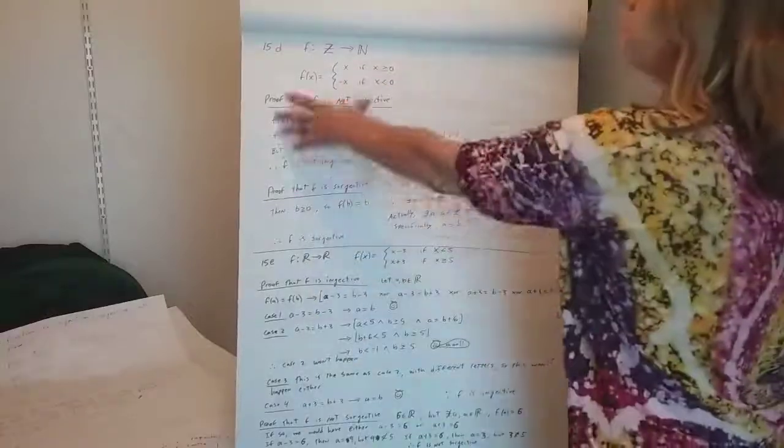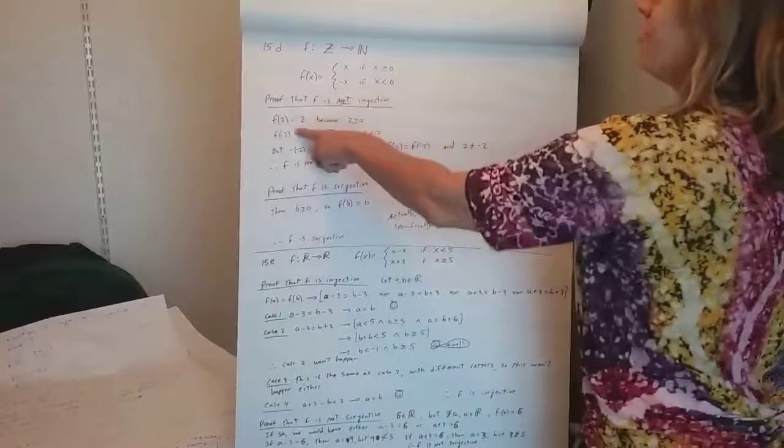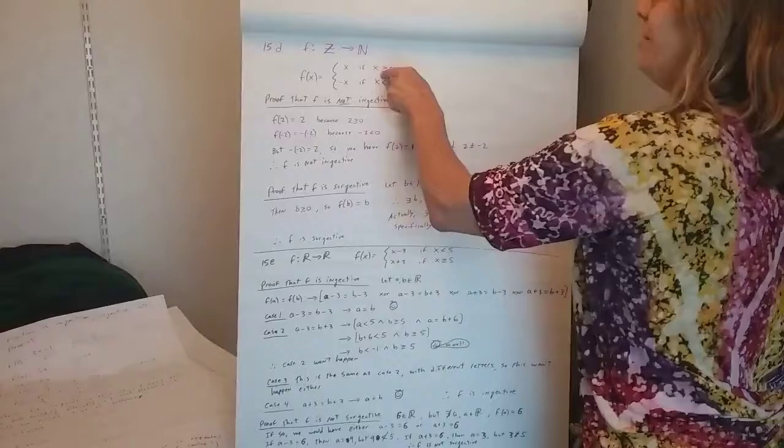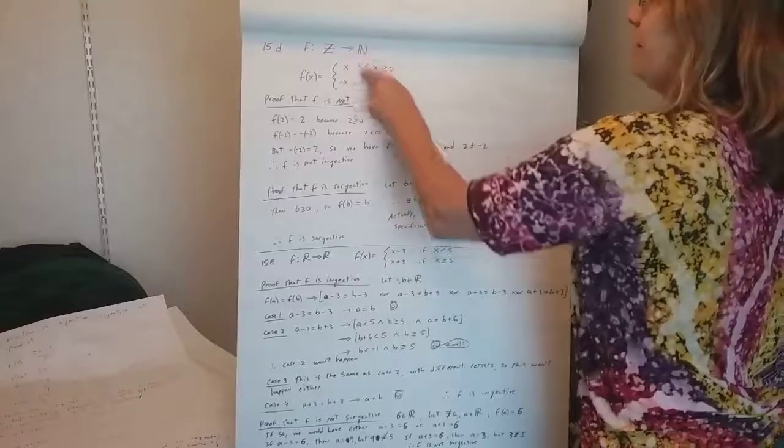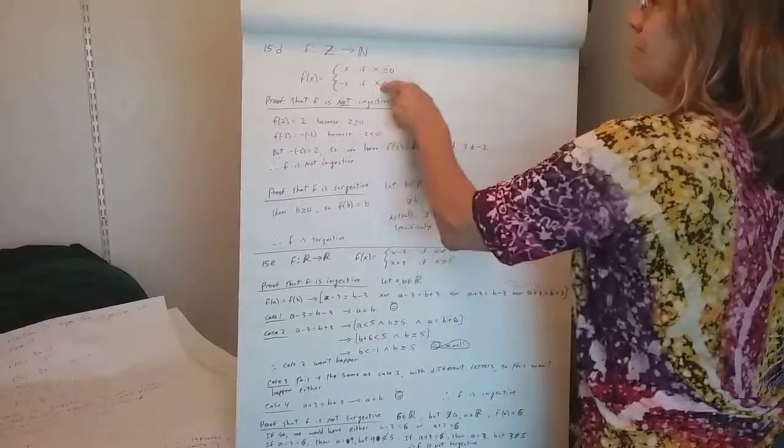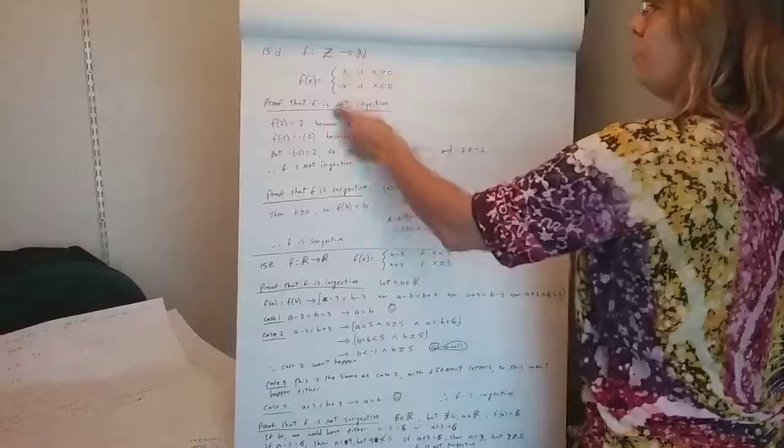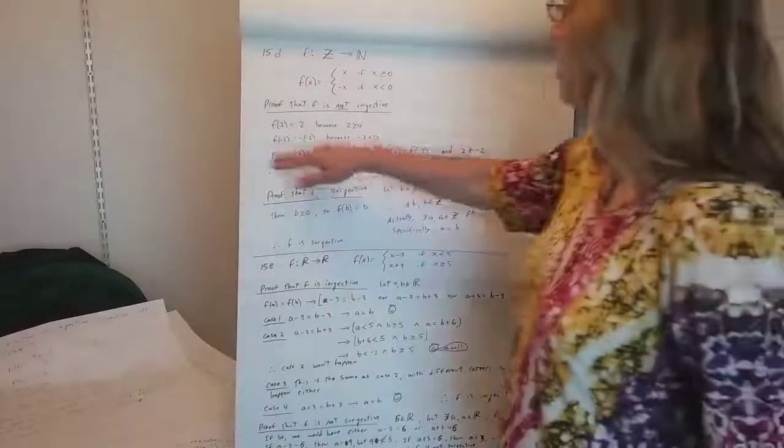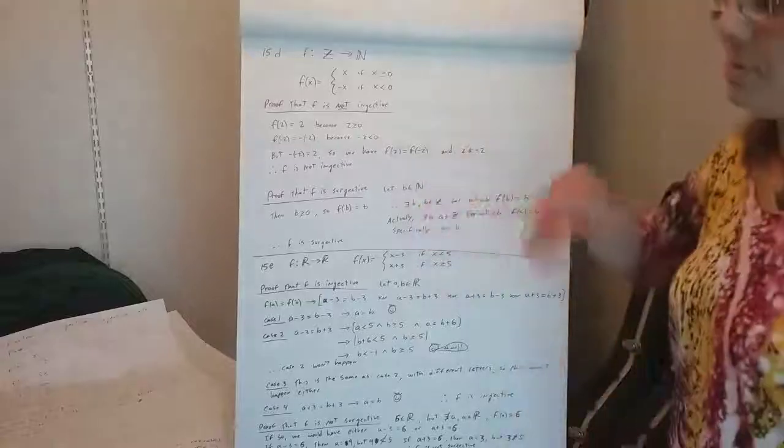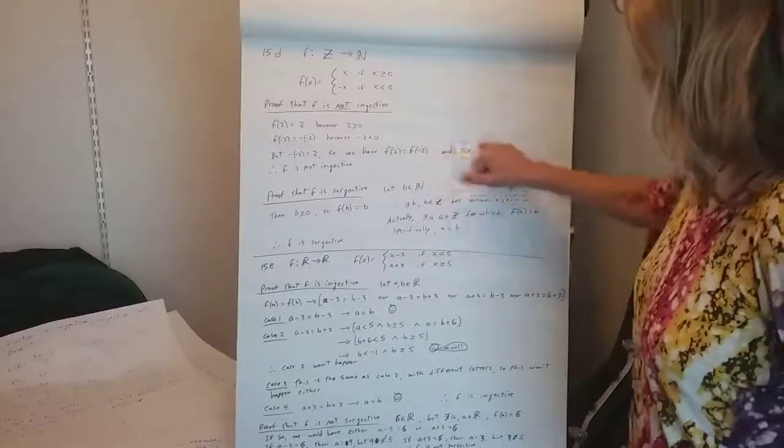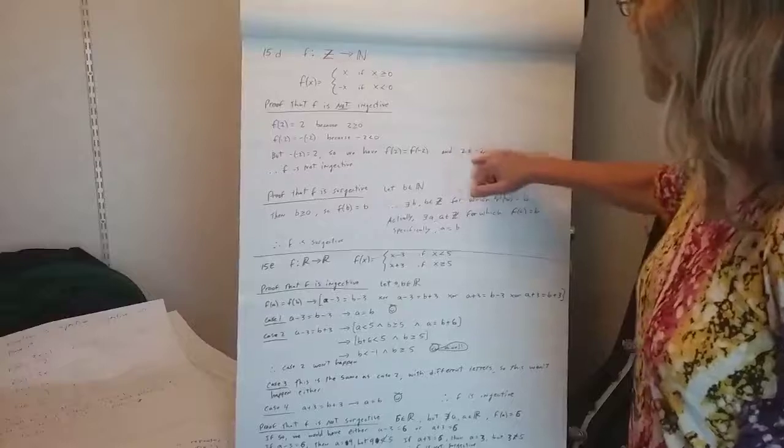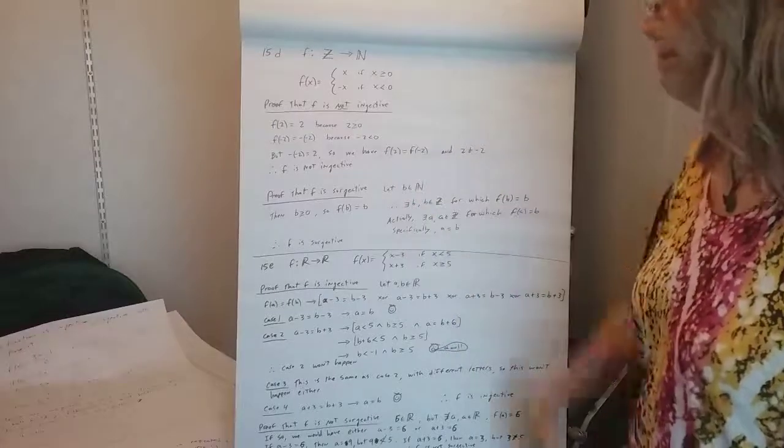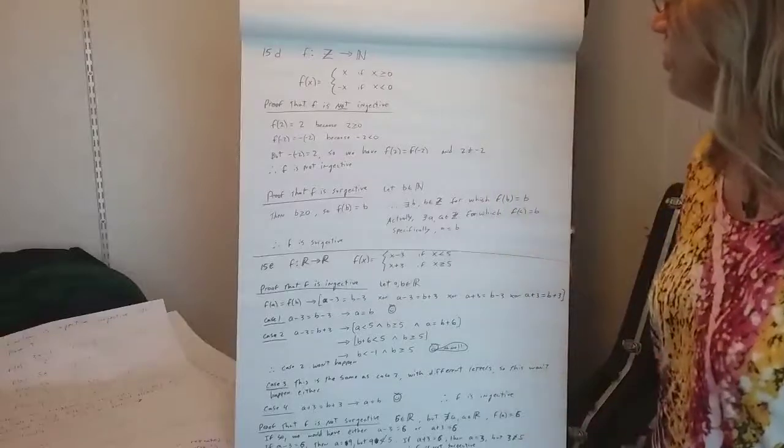And actually, that's why I proved that f is not injective, because f of 2 is 2, right? Because 2, you use this guy, and then f of negative 2, negative 2 is negative, so negative negative 2, which is 2. So you've got two things going to 2, namely 2 and negative 2, and so we've got two x values that are not the same going to the same y value, and not injective, right?